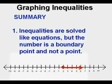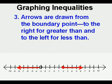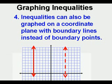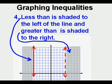Inequalities are solved like equations, but the number solved for is a boundary point and not a boundary line. Boundary points are solid for greater than or equal to and less than or equal to, and open points for less than or greater than. Arrows are drawn from the boundary point to the right for greater than and to the left for less than. Inequalities can also be graphed on a coordinate plane with boundary lines — solid lines for greater than or equal to and less than or equal to, dashed lines for less than or greater than. Less than is shaded to the left of the line and greater than is shaded to the right.